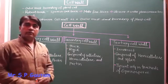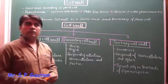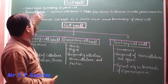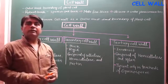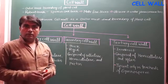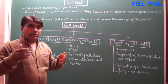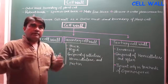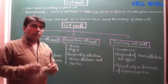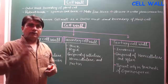In this video we are going to discuss about cell wall. Cell wall is the outermost boundary of the cell — it protects the cells of plants from adverse environmental conditions. So it is a protective mechanism in the case of plant cells.